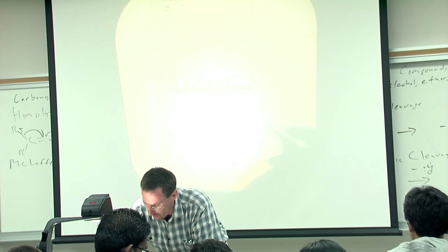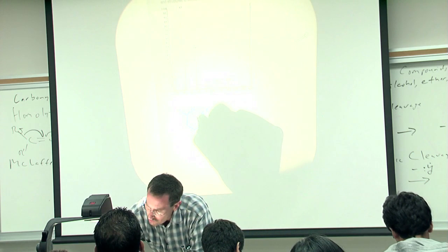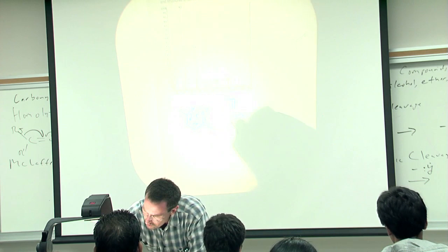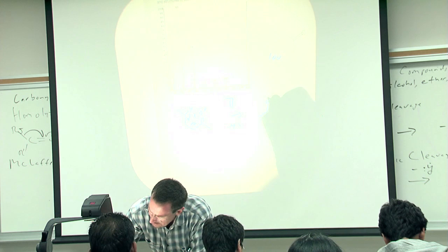And if I just write my McClafferty rearrangement like so, I lose propene. That's minus 42. We started with a weight of 100, and so let me just write my resulting product. And so we come to a peak at 58, and there we see our peak at 58.